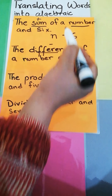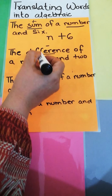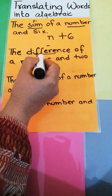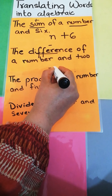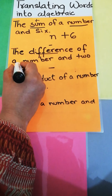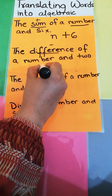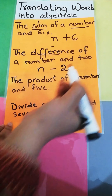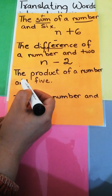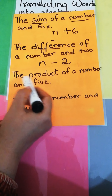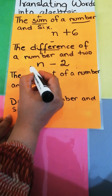The difference of a number and two. The word 'difference' means minus — you can use the word subtract or any similar word. A number can be any number, and the difference of a number and two is written as n − 2.